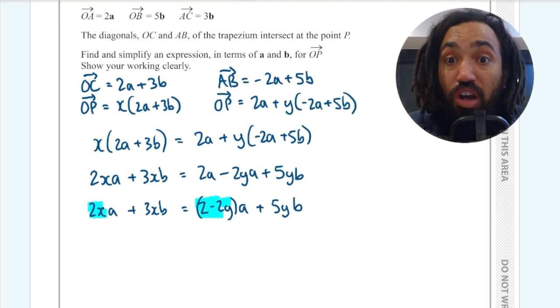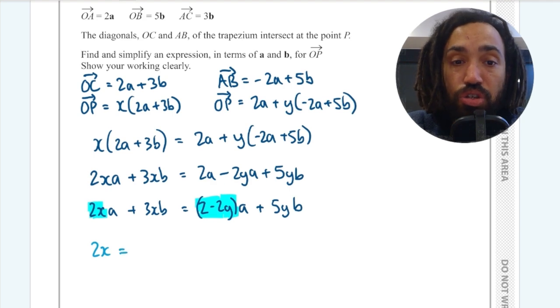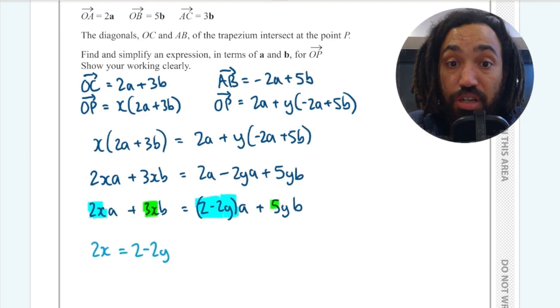Because these two expressions for OP are exactly the same, their A components must be equal to each other. So I can write that 2X is equal to 2 minus 2Y. And again because these two expressions are equal to each other it means their B components must be equal to each other. So I can write that 3X must equal 5Y.